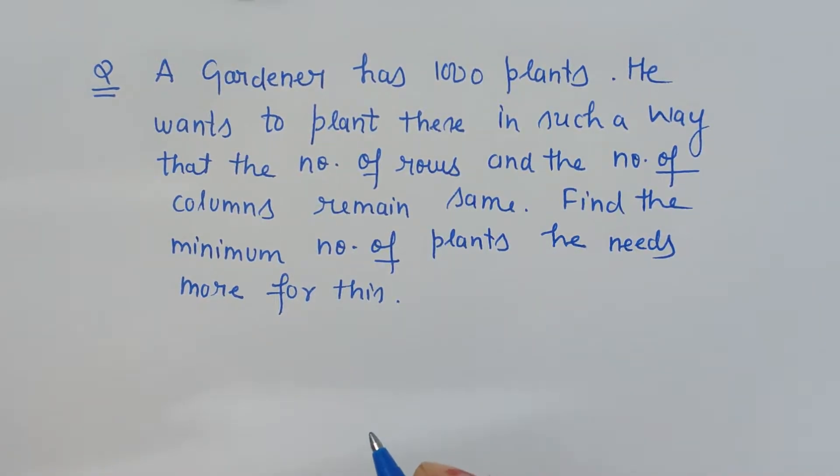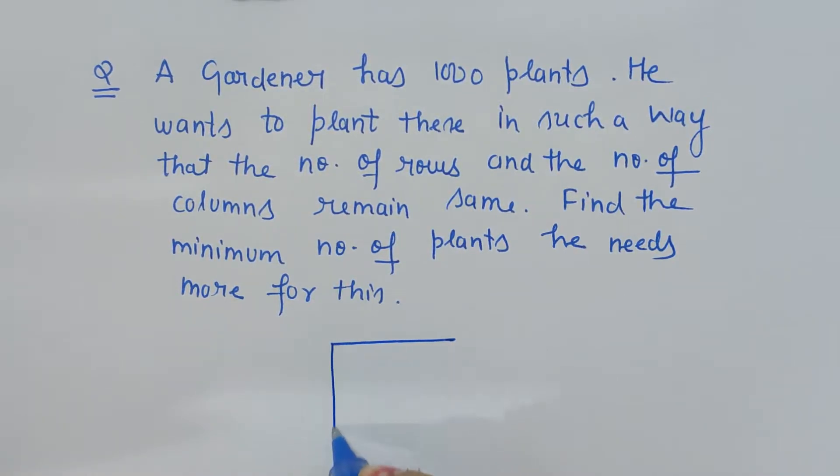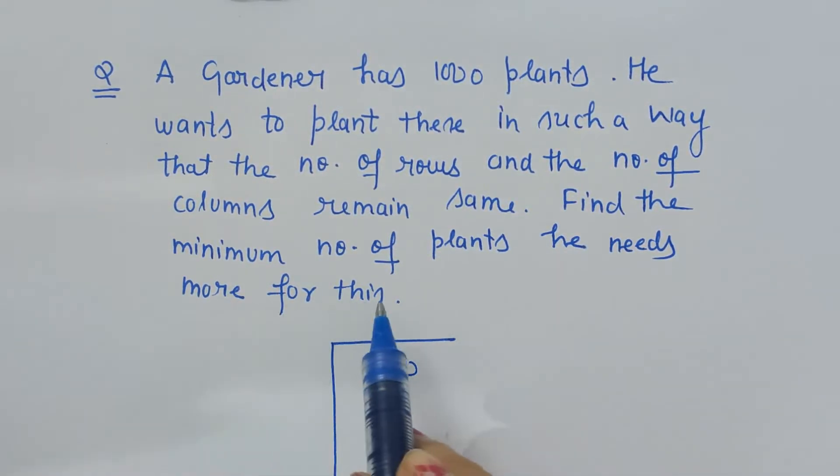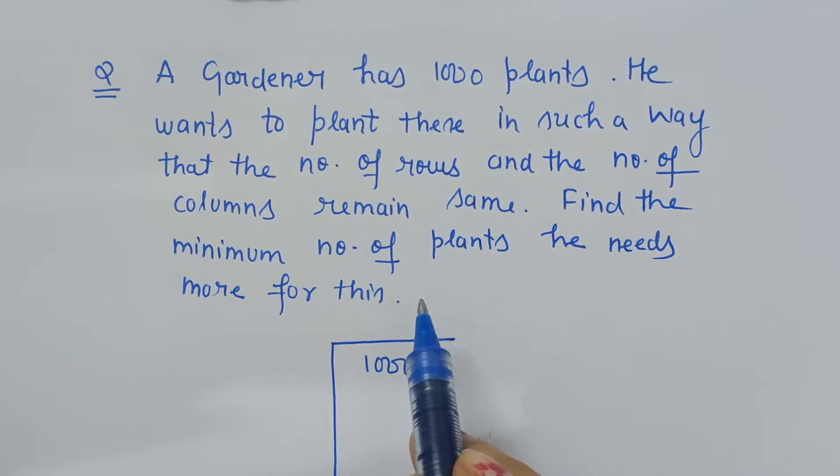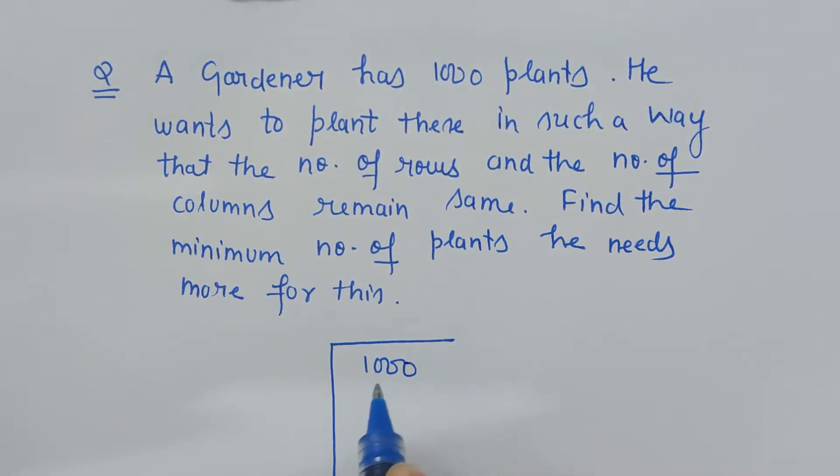So what we have to do is obviously we have to find the square root. Let's find the square root of 1000 which will help us in finding the same. We are asked how many more plants are required, that means how many more plants should be added actually. Addition of number to make something a perfect square problem we have already discussed in my previous video which you can watch again.